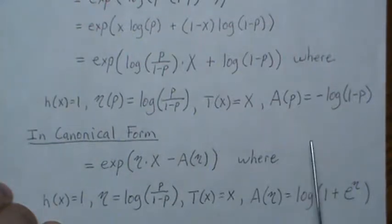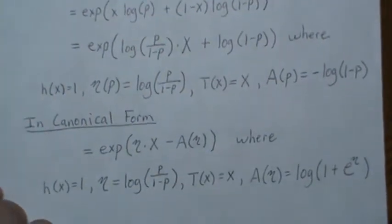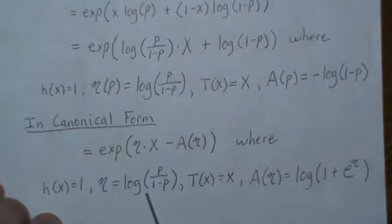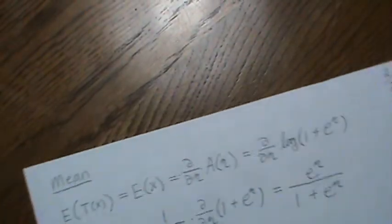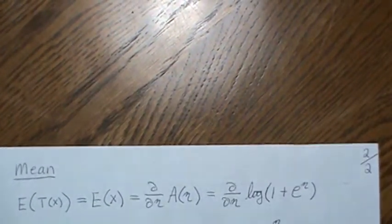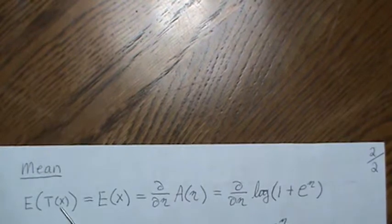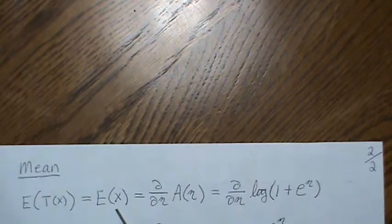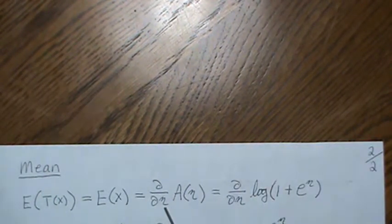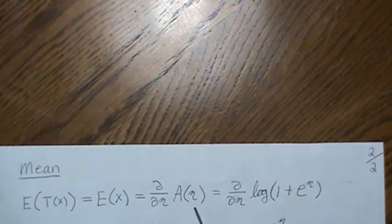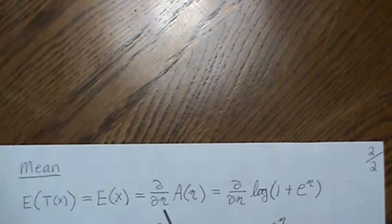So the mean of our sufficient statistic, which in this case is x, is the partial or the derivative of the log partition with respect to eta.